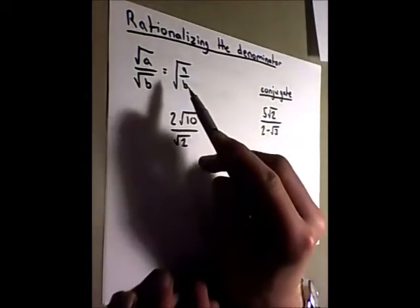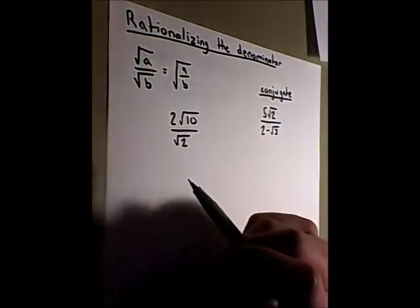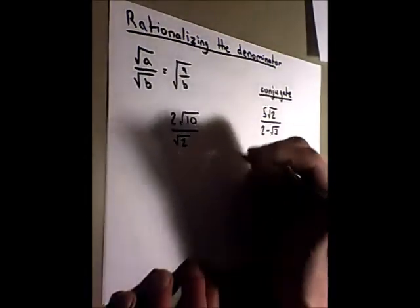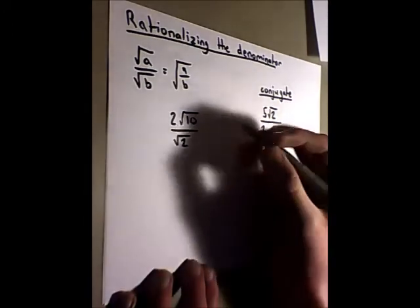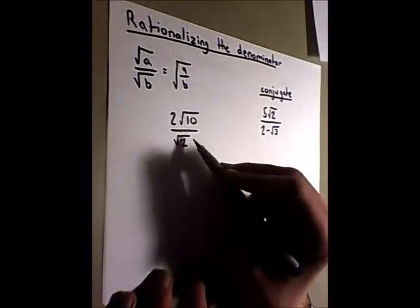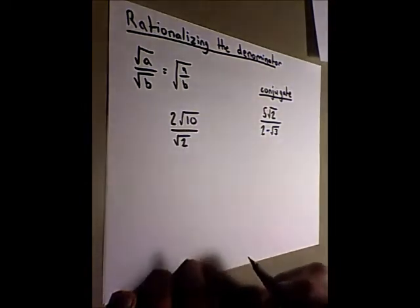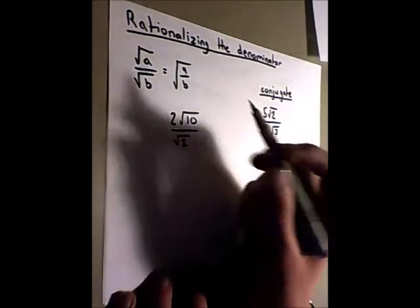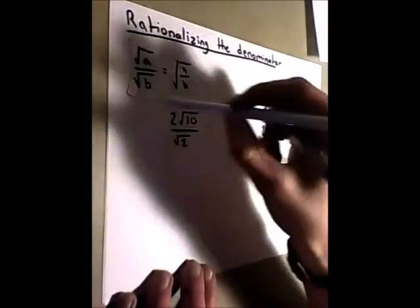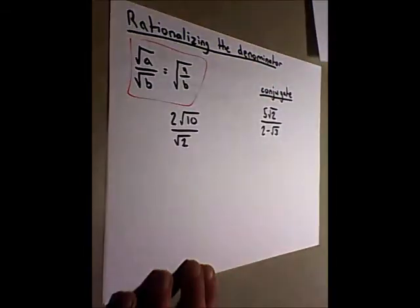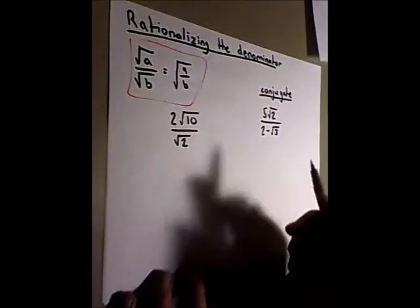When you're dividing roots, you're going to notice a lot of times that while this is in simplest form, it's actually not because you can't have a root function as the denominator. So to fix this, we just remember that this is the same as this and this can help us with problems.